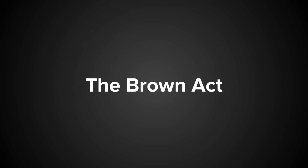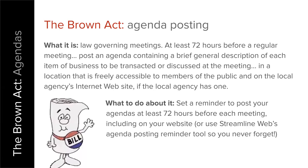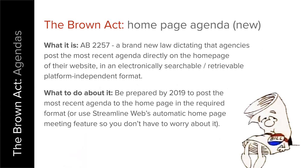On to the Brown Act. You're all familiar with the agenda posting requirements around your final agendas — 72 hours in advance, that's been going on for a long time. If you have a website, agendas also have to be posted to your website in that same time frame. AB2257 requires that you have a link directly to the most recent agenda right on your homepage. It can't link to another page that has agendas, or a page of meetings that have agendas attached — it needs to link right to that agenda.